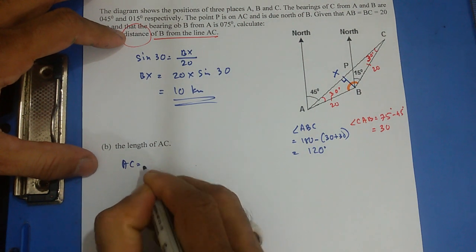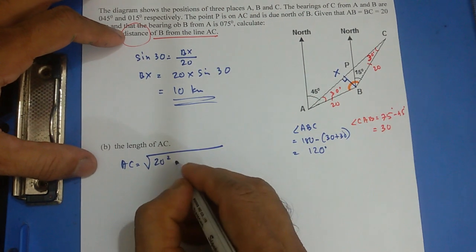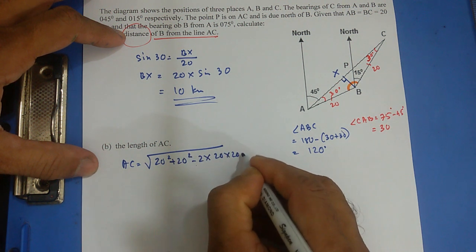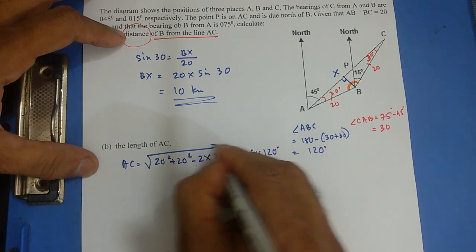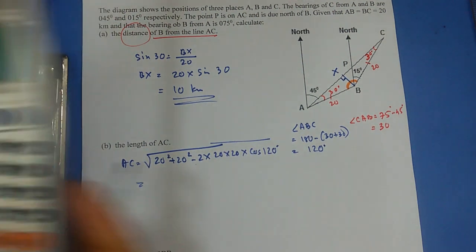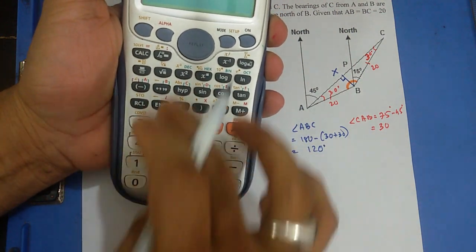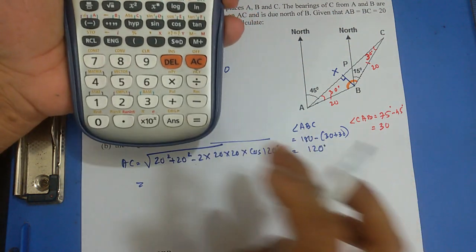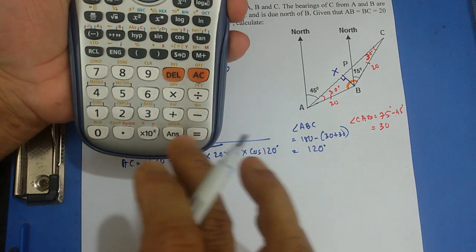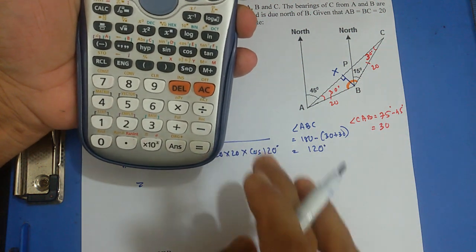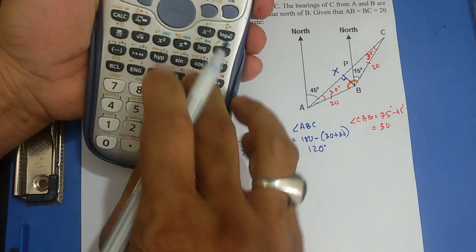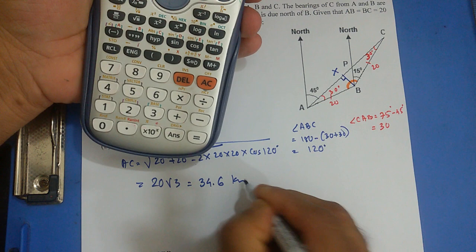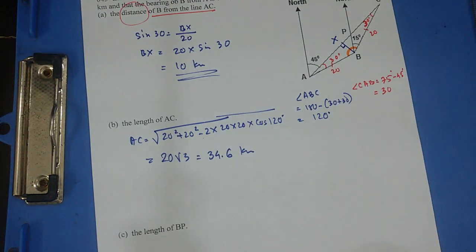So this AC is supposed to be square root of 20 squared plus 20 squared minus 2 times 20 times 20 times cos 120 degrees. 20 squared plus 20 squared minus 2 times 20 times 20 times cos 120 degrees and square root 1200. That's going to give me 20 root 3 or 34.6 kilometers. So this AC equals 34.6 kilometers.